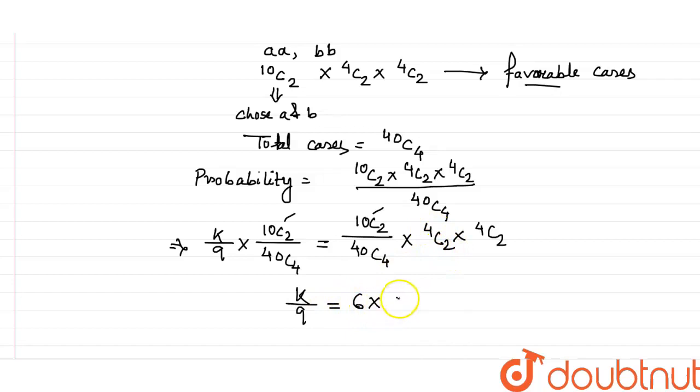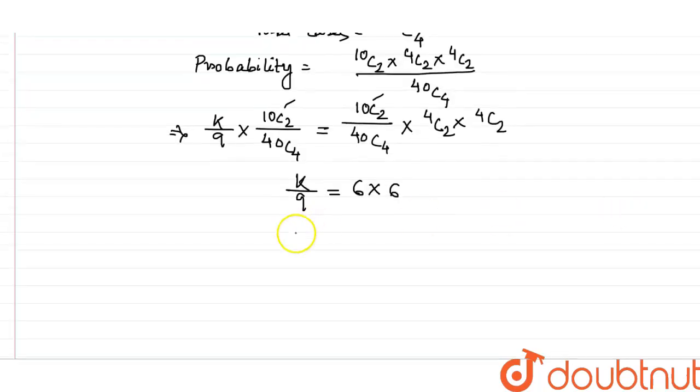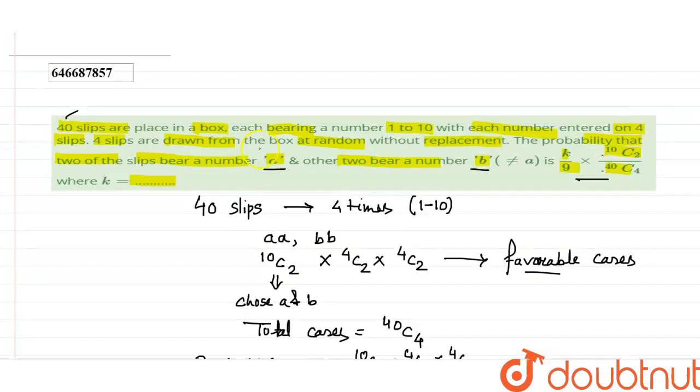4C2 value is 6 and again it is 6. What is the value of K here? K equals 9 × 6 × 6. 9 × 36. 9 × 36 is 324. So what is the value of K? It is 324. Thank you for watching my video.